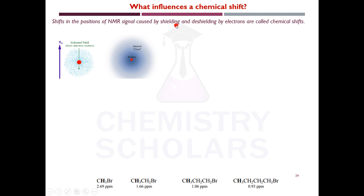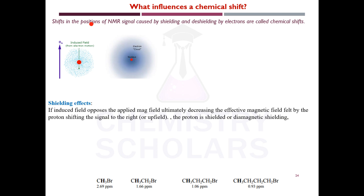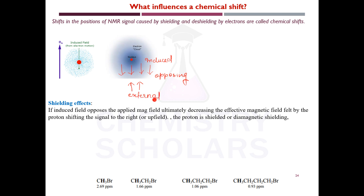The two key words to remember in NMR are shielding and deshielding. Shielding and deshielding cause shifts in the position of the NMR signal, and this shift is called chemical shift. When a nucleus is surrounded by an electron cloud, it is shielded. When you apply a magnetic field, the magnetic field felt by the nucleus is less because the induced magnetic field of the electron cloud opposes the applied magnetic field.